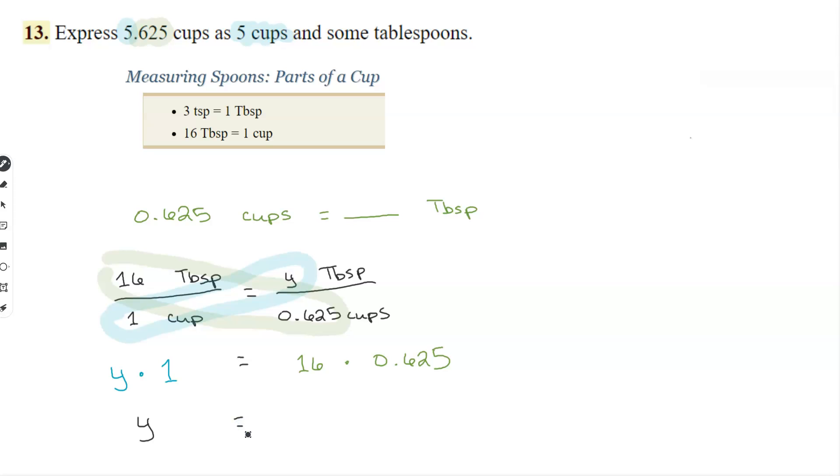We are multiplying the 0.625 by 16. Again, the beauty of this is you have to write a little bit longer but you have time and it tells you multiply. You don't have to be able to look at it and know which one it is.